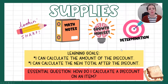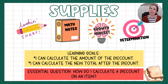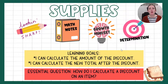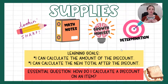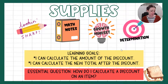Go ahead and grab those needed supplies: that writing utensil, math notebook, growth mindset, and as always, some determination. We have two learning goals today. We want to be able to calculate the amount of a discount, and then we want to be able to calculate our new total after the discount — what are we actually going to pay for something?